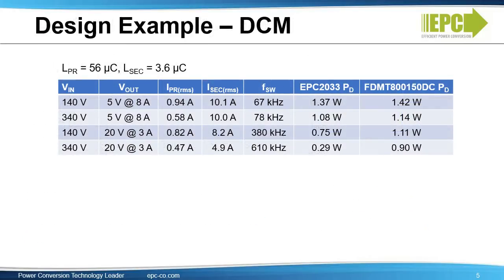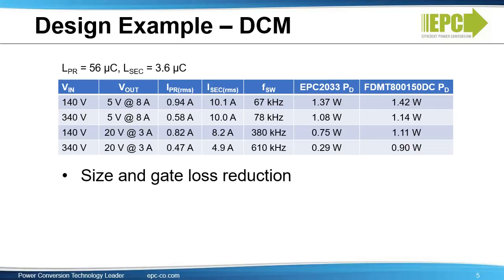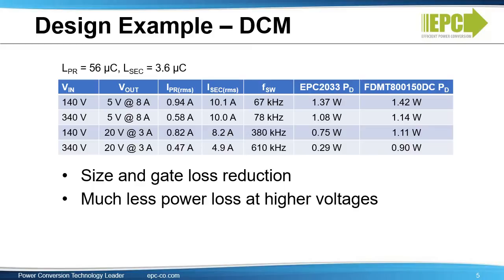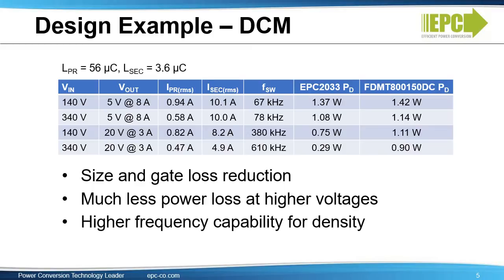In this slide, we compare the losses of the 150-volt EPC2033 eGaN FET with a typical silicon MOSFET in DCM. eGaN FETs reduce the size and gate losses, and consume much less power at higher voltages. They enable higher frequency capability for higher densities. Please note: the worst case for losses is low AC line and low V-out, or around 5 volts.